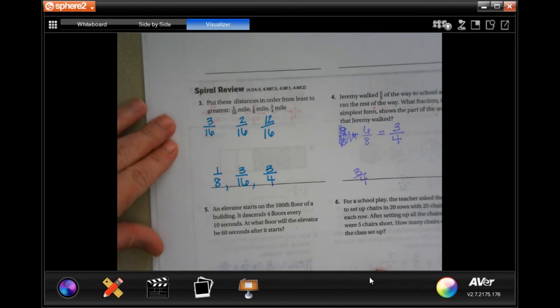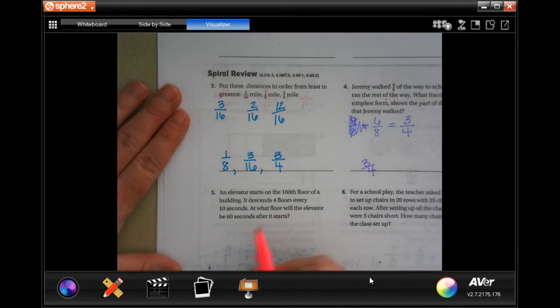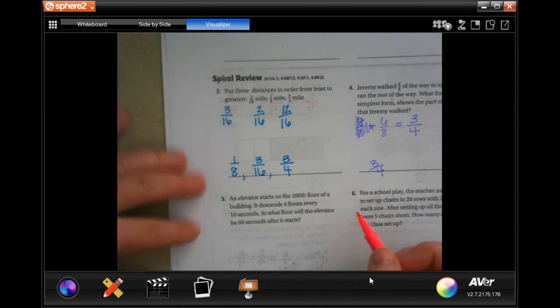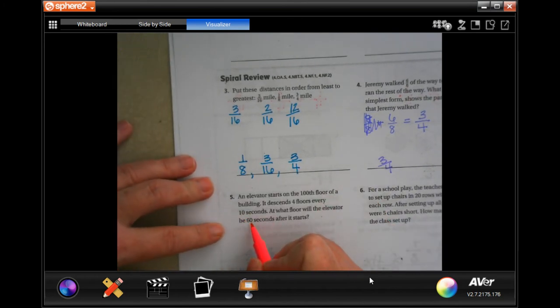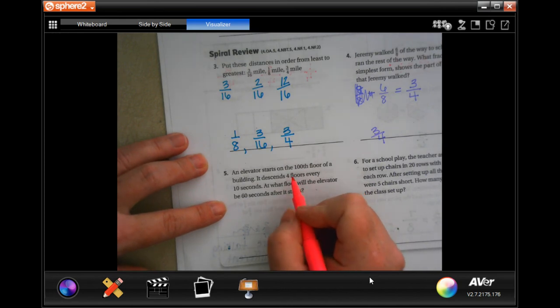An elevator starts on the 100th floor of a building. It descends 4 floors every 10 seconds. What floor will it be on after 60 seconds? Well, 10 times 6 is 60, so then 4 times 6 is 24.